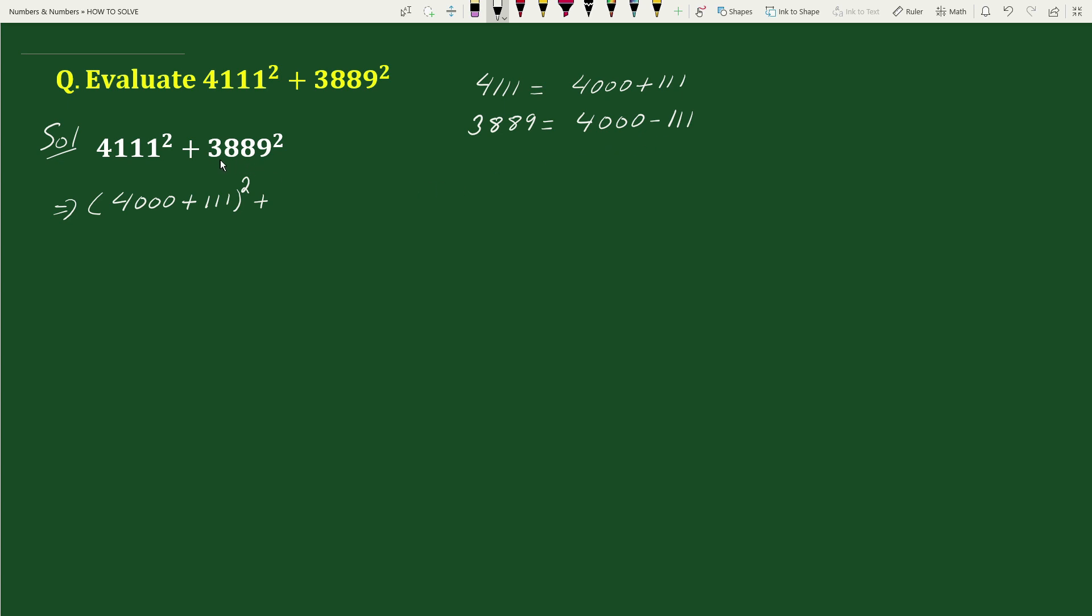So we can write 3889 square as 4000 minus 111 whole square. Now to solve this we will use algebraic formula: a plus b whole square plus a minus b whole square equals 2 times a square plus b square.